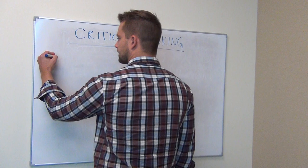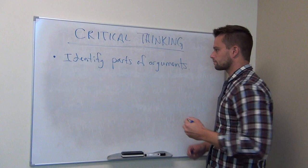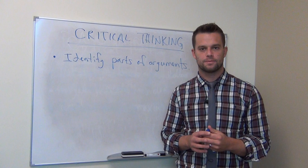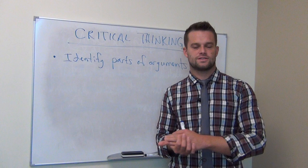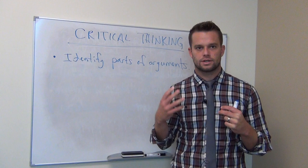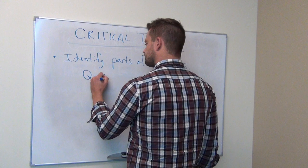So the next thing that critical thinkers are able to do is identify parts of arguments. We're not talking about arguments in terms of a shouting match between two people. We're talking about arguments in a logical or philosophical sense. An argument is composed of premises and conclusions, where the premises are reasons you have for a definite conclusion. Critical thinkers are able to identify parts of arguments, and they're also able to identify when somebody doesn't present an argument.